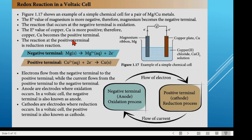This is what we call a half equation. The half equation at the negative terminal is the half equation for oxidation. The magnesium here will donate two electrons and become Mg²⁺ ions. The electrons flow from the negative terminal to the positive terminal, while current flows from the positive terminal to the negative terminal. At the positive terminal, Cu²⁺ from the solution receives the electrons donated by magnesium and becomes copper solid. This is reduction — gaining electrons.